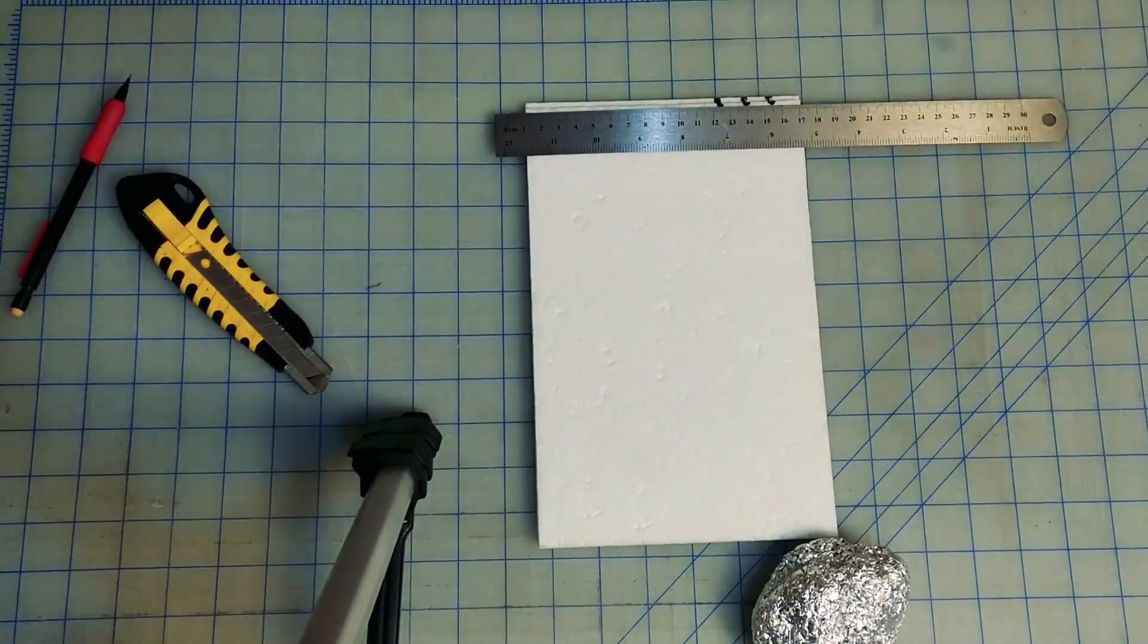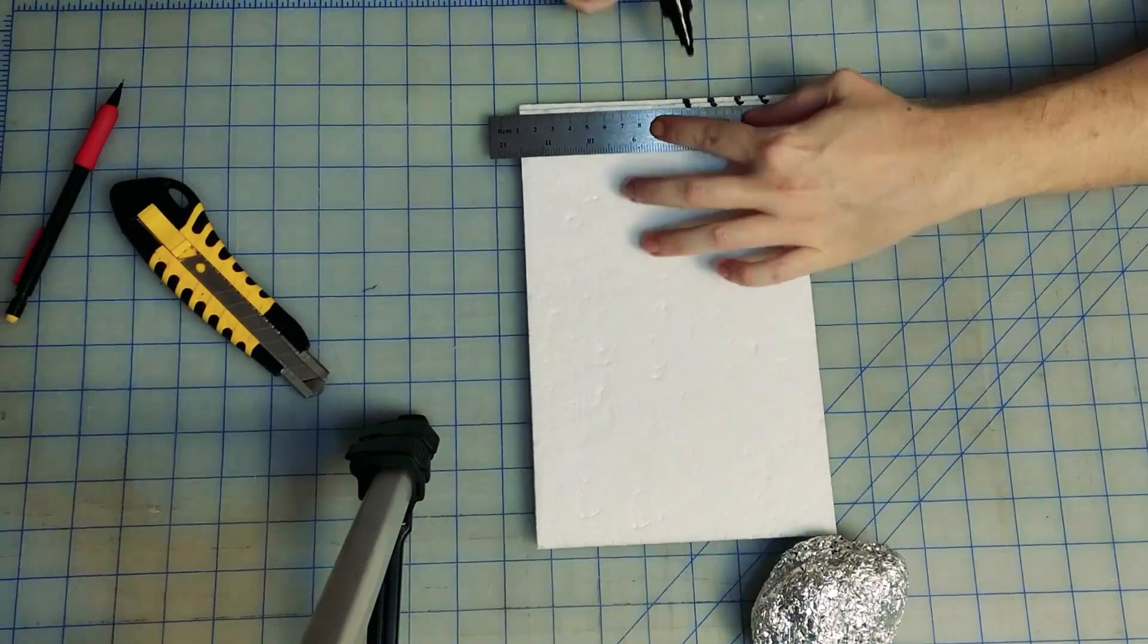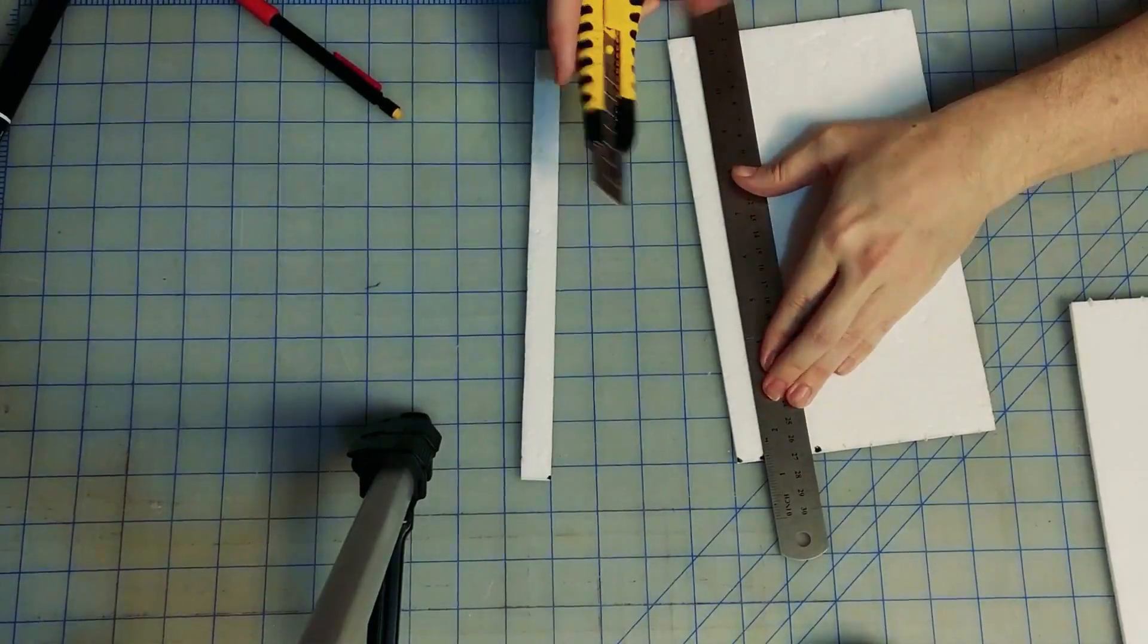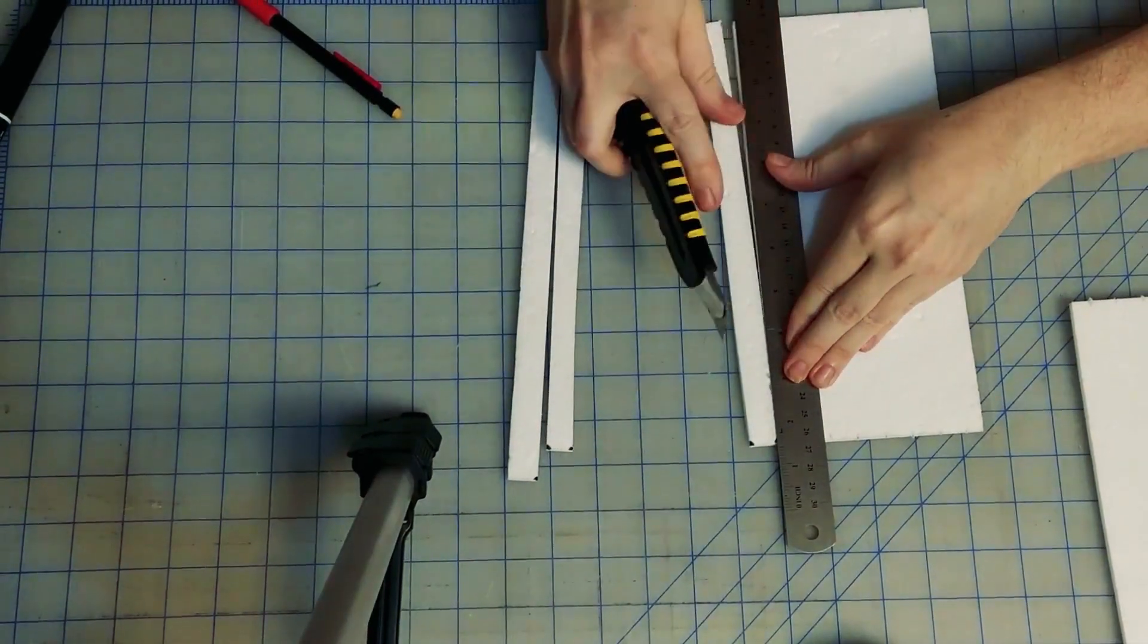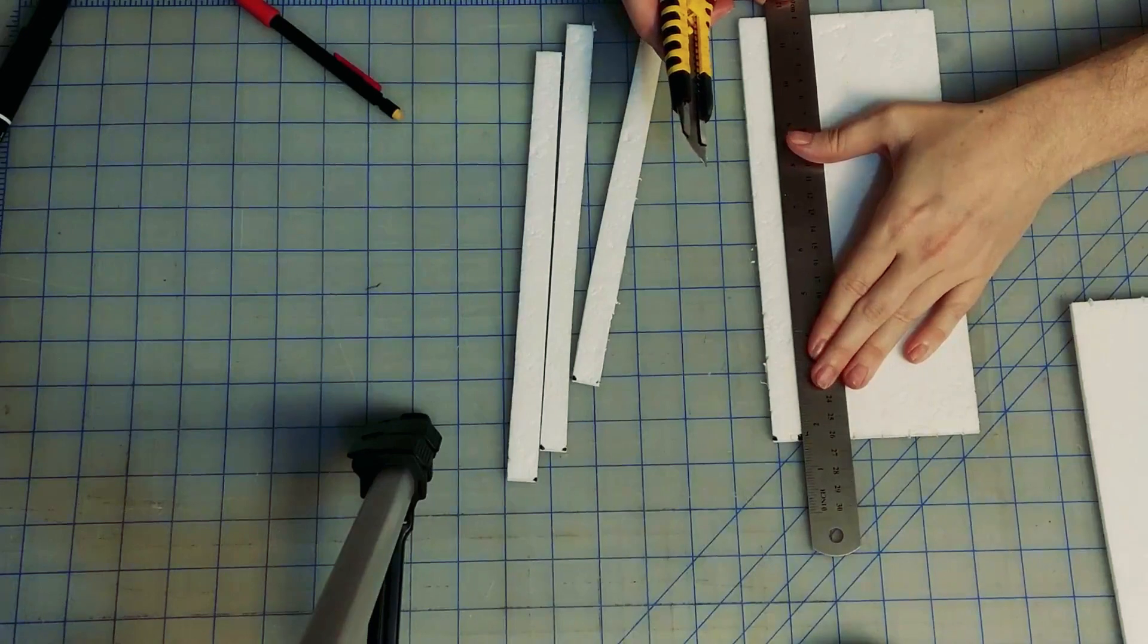Here we measure out one and a half centimeter section of foam, and then cutting along the length. Make sure you have your blade sharp and are cutting at the correct angle, or you will get tear out like I did here.